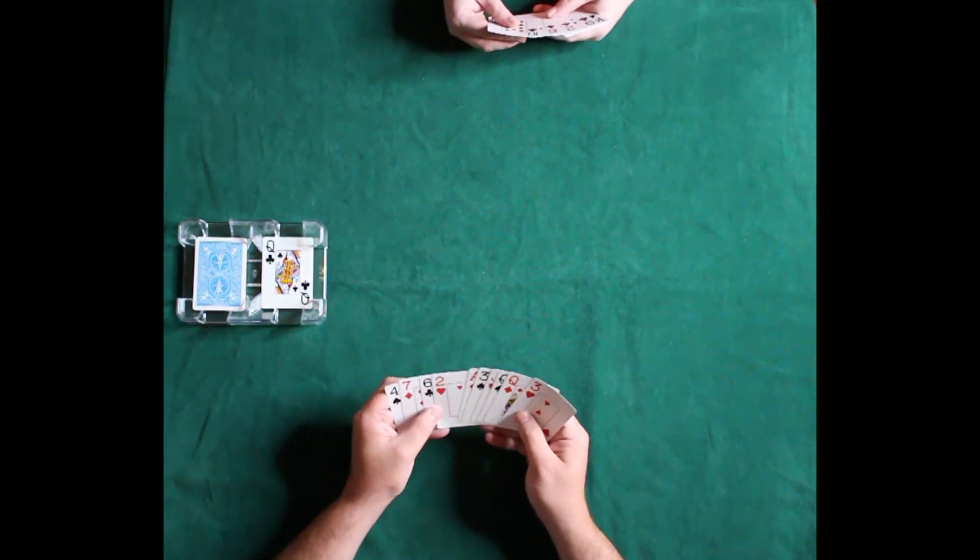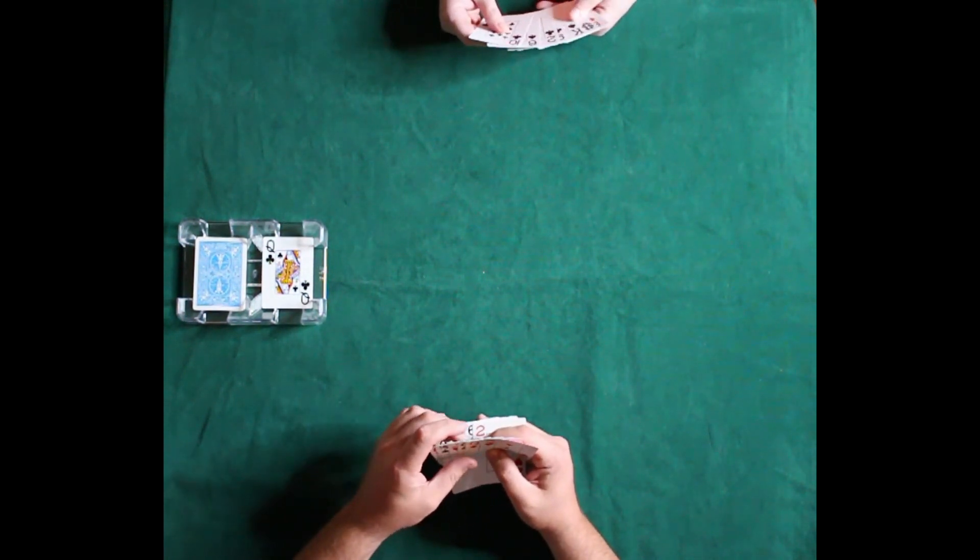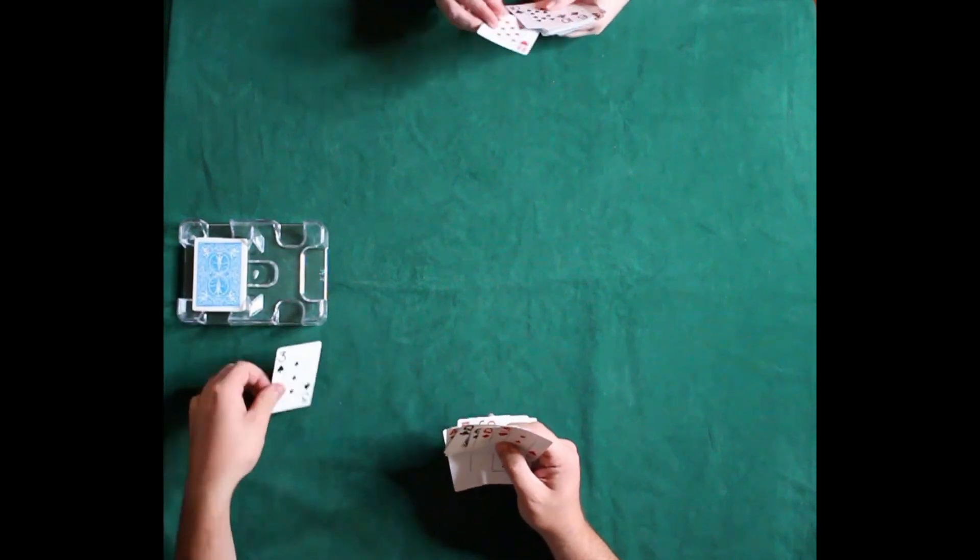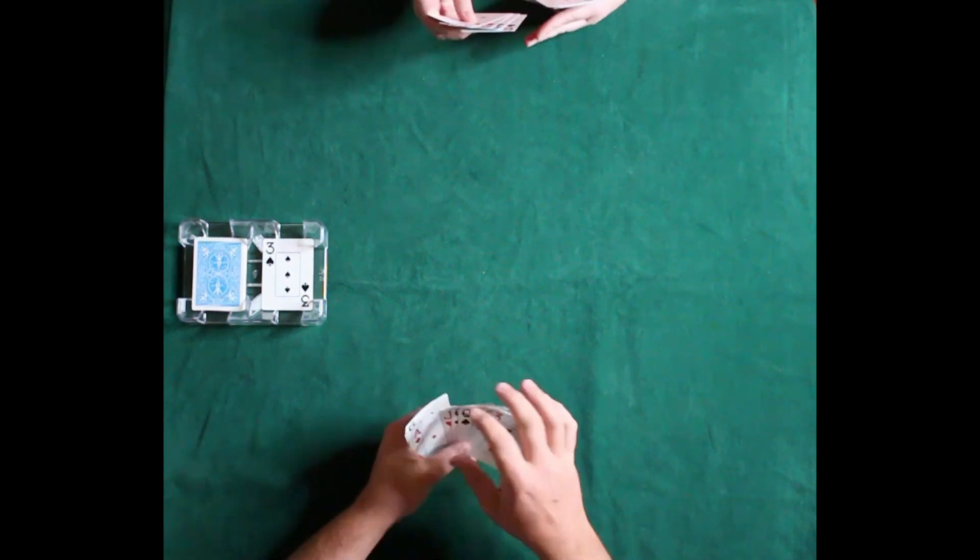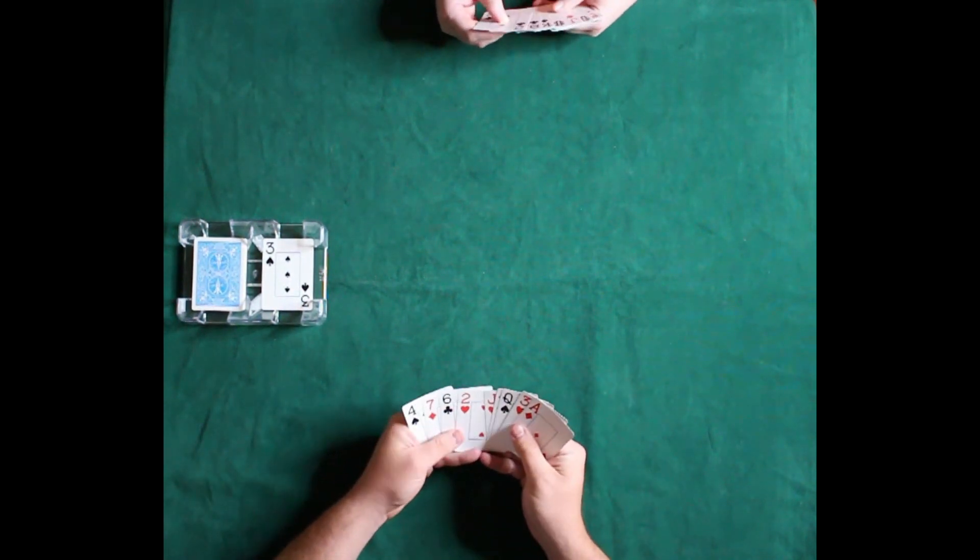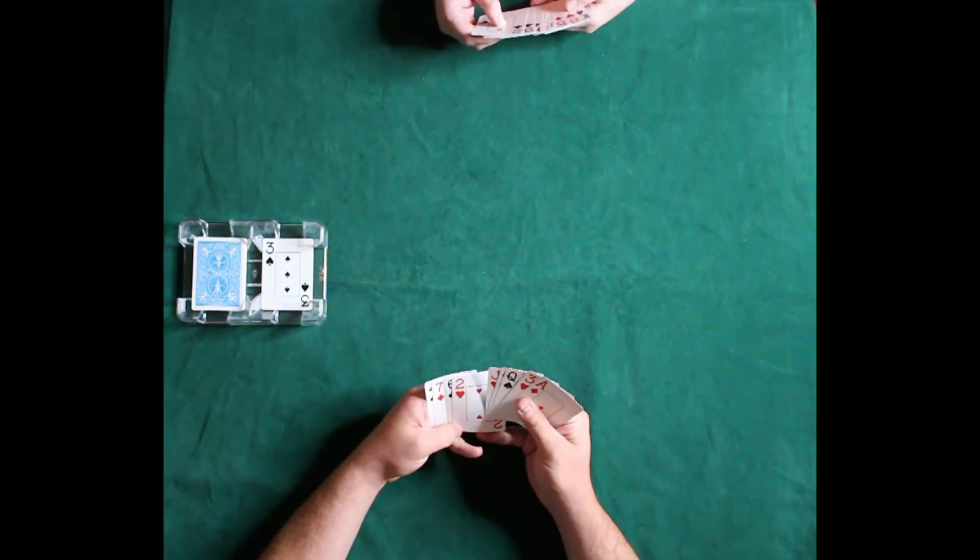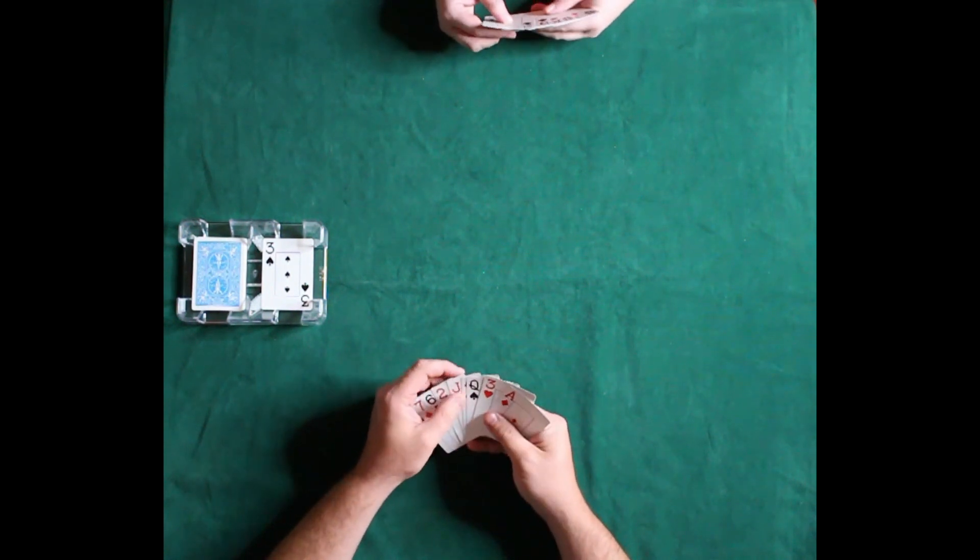We determined that I would go first, so I went ahead and deposited that three and collected the queen out of the discard pile. Something I really didn't cover in the video is that you can take cards from the discard pile, but you must have a number card in order to exchange. Otherwise, face cards can only be discarded.